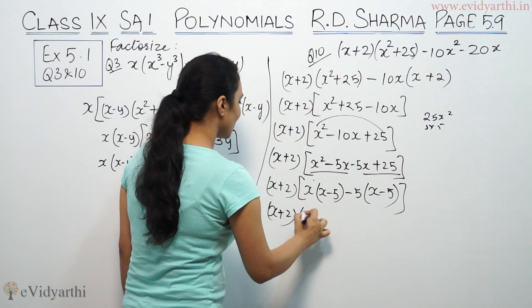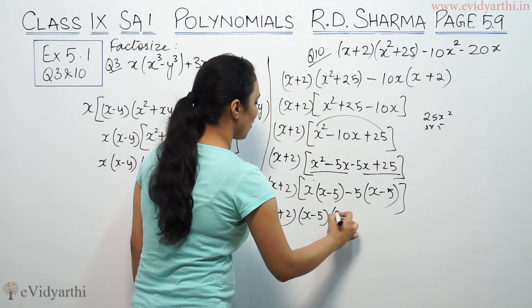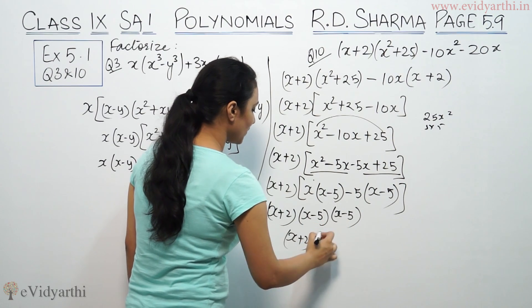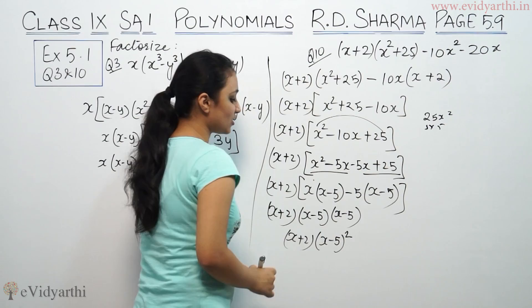So we have (x + 2)(x - 5)(x - 5). This is (x + 2)(x - 5)².